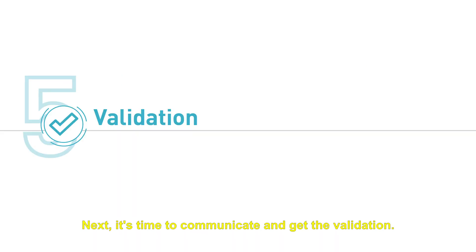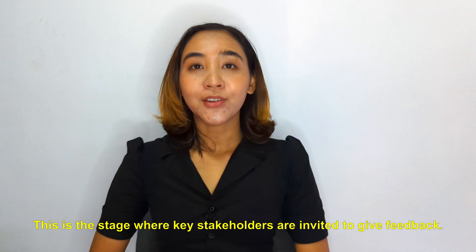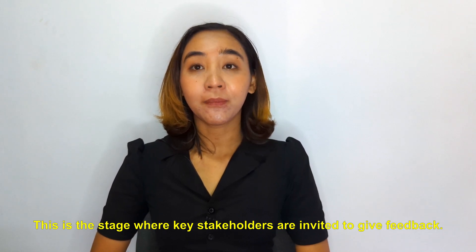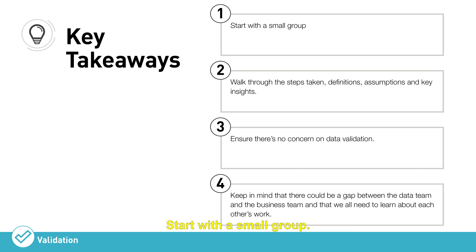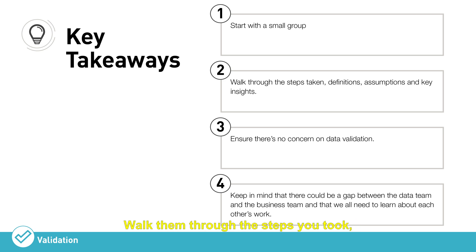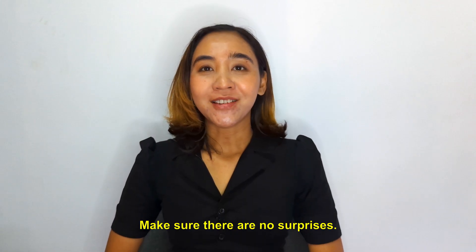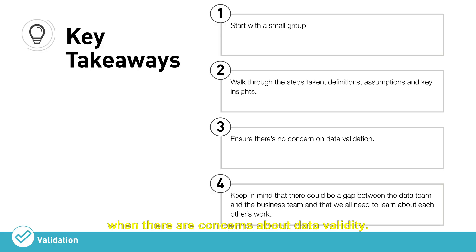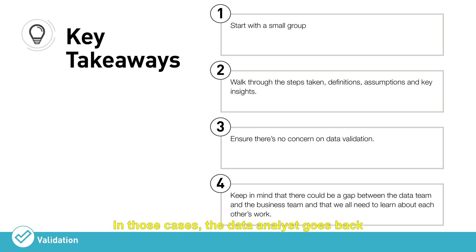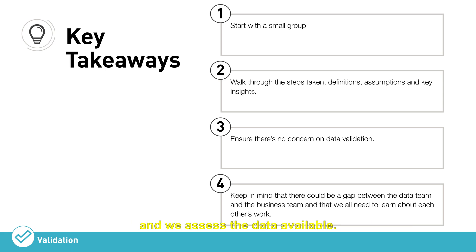Next, it's time to communicate and get validation. This is the stage where key stakeholders are invited to give feedback. Start with a small group — if the product owner requested the data, invite that person to provide feedback first and expand to a bigger group later. Walk them through the steps you took, definitions, assumptions, and key insights. Make sure there are no surprises. This can take a lot of time when there are concerns about data validity, migration, or missing data. In those cases, the data analyst goes back to the data availability stage and reassesses.